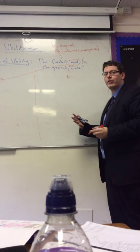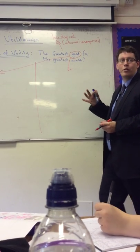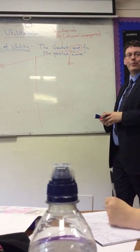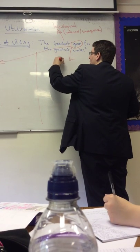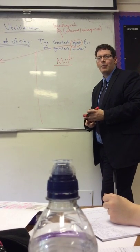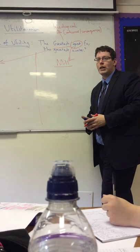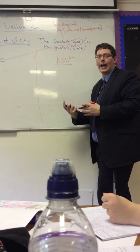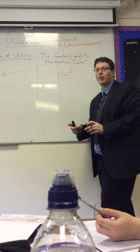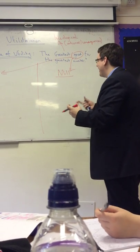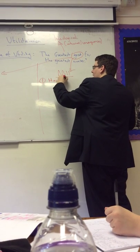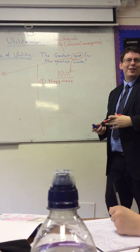One of Bentham's followers was John Stuart Mill, who also supported the greatest good for the greatest number but adapted Bentham's approach. Mill said that good is not pleasure, because we can find simple things pleasurable and those can't be compared to more complex things. You couldn't compare the pleasure of a newborn baby to the pleasure of eating a Mars bar. So Mill said instead of pleasure, we should use the word happiness.